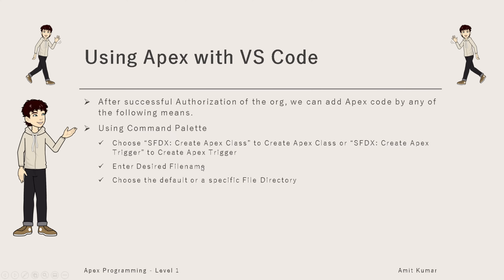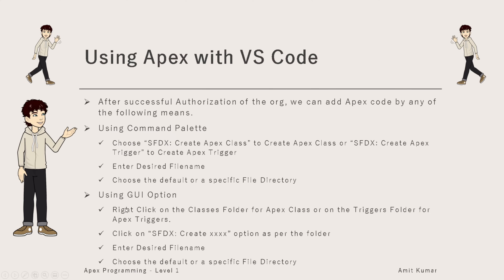Then you have to provide the desired file name and choose the default or a specific file directory where you want to save the file. The same thing can be done with the GUI option by right-clicking on the classes folder to create an Apex class, or on the triggers folder to create an Apex trigger. Then click on the SFDX: Create option — 'Create Apex Class' or 'Create Apex Trigger' — provide the file name and the desired location.